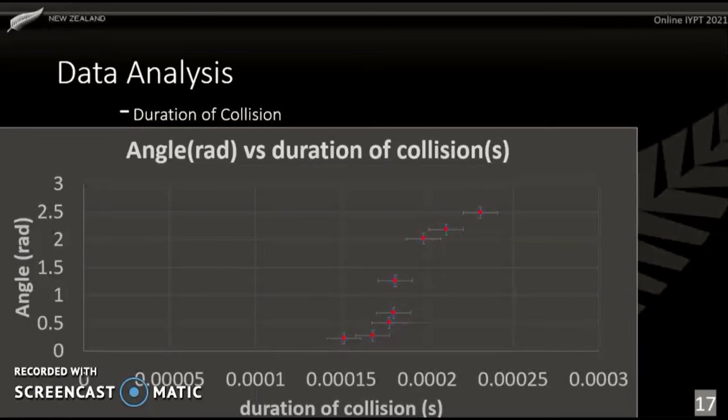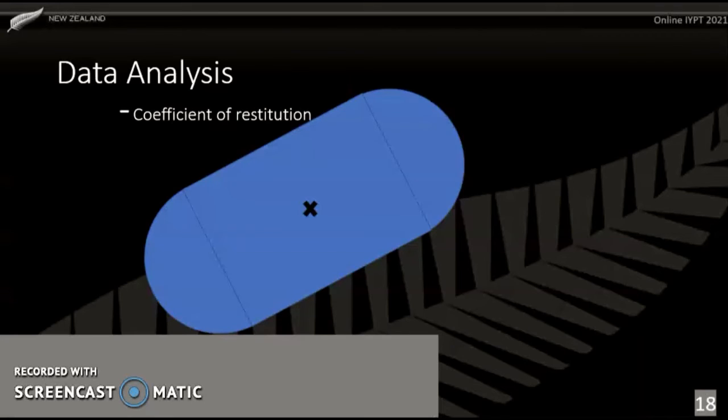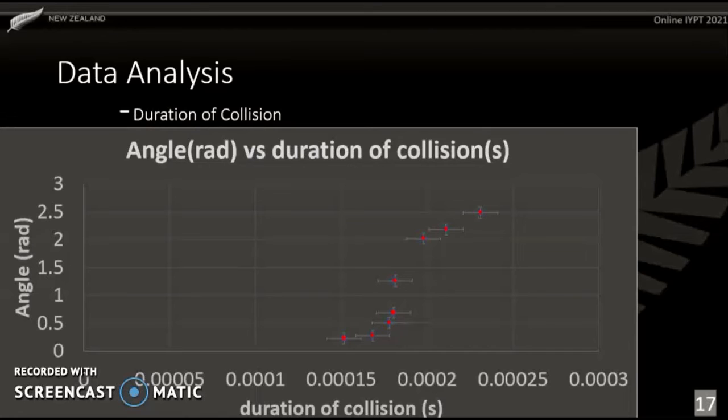This makes sense, because at small angles, the tic-tac is close to horizontal, and so the normal force will have a large tangential component, which will cause a larger angular acceleration, and so the tic-tac would rotate away from the ground much faster.